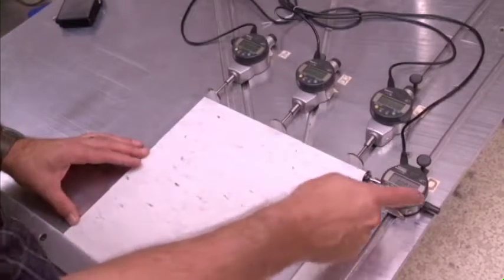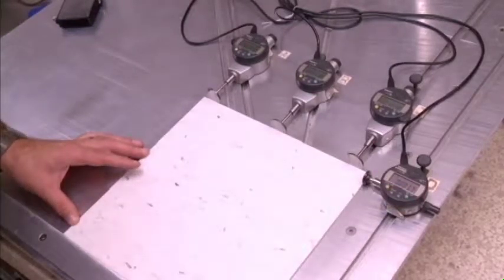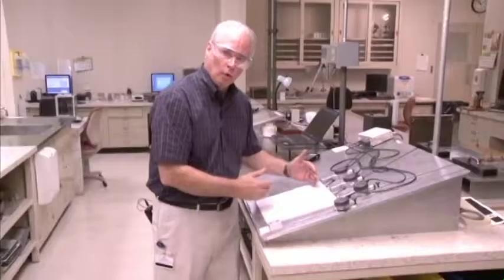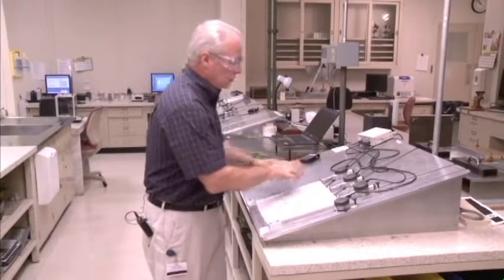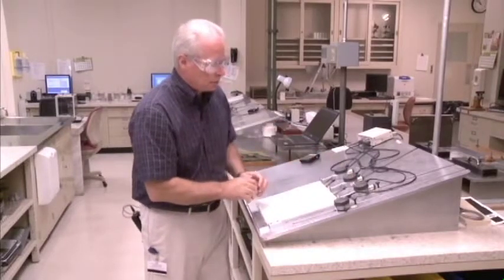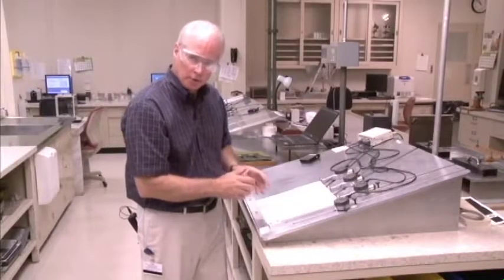So if the gauges are set at exactly 12 inches and we now put the tile in, we can tell if the tile is slightly more or slightly less than 12 inches in size. We'll get size readings from these three gauges. This gauge over here on the corner measures the squareness of the tile.